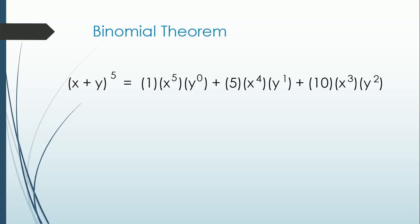For the third term, the degree of x is 3 since it must be decreasing. The degree of y is 2 because it must be increasing. The constant is 10 because if we multiply the degree of x in the second term by the constant of the second term — which is 5 times 4 — and divide it by the degree of y in the third term, which is 2, the answer will be 10.